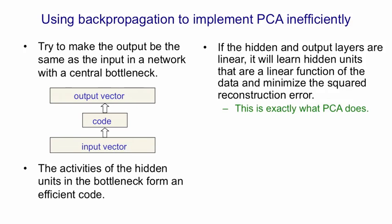If the hidden units and the output units are linear, then an autoencoder like this will learn codes that minimize the squared reconstruction error. And that's exactly what principal components analysis does.